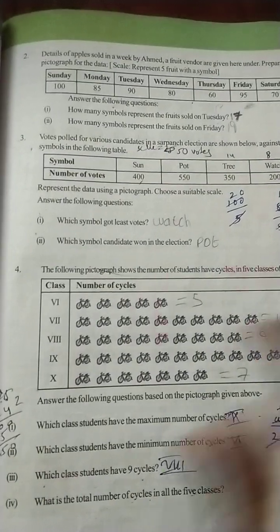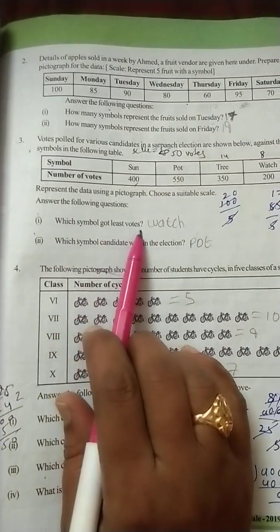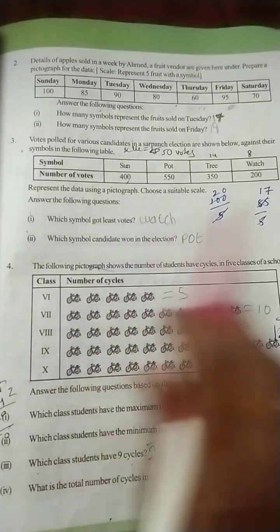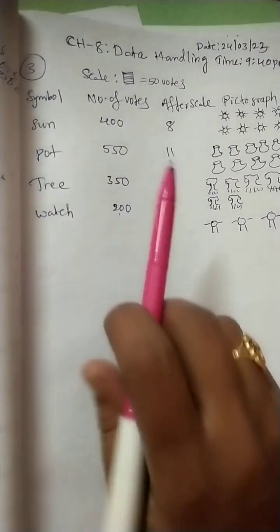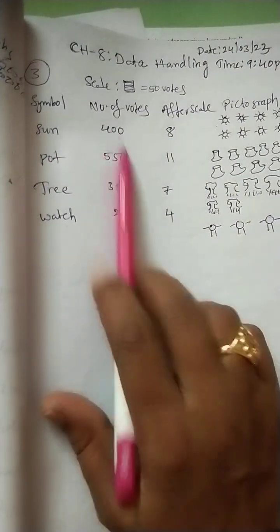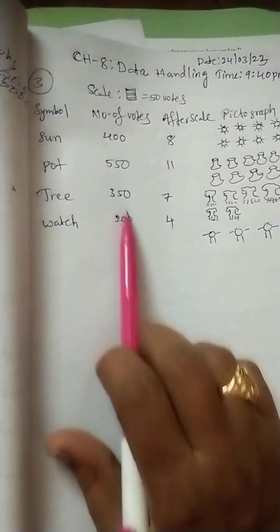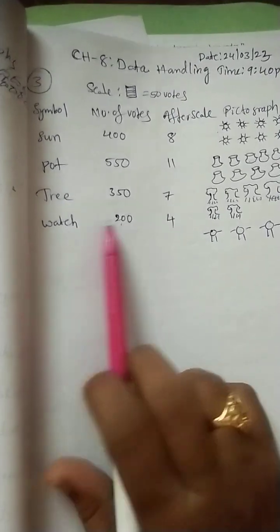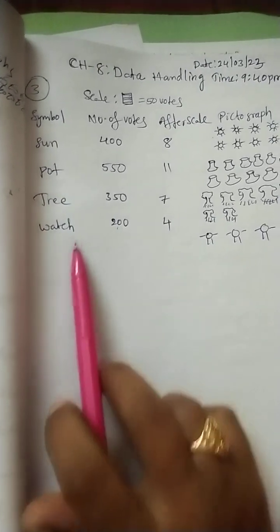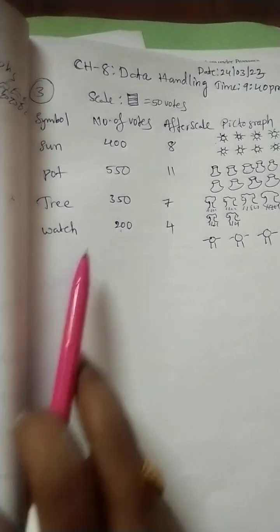What are the given questions? See, which symbol got least votes? Watch symbol. Why? How? Just we can compare these votes. Among all these, 200 is the least number. So the 200 with symbol, watch symbol. So watch symbol got least votes.